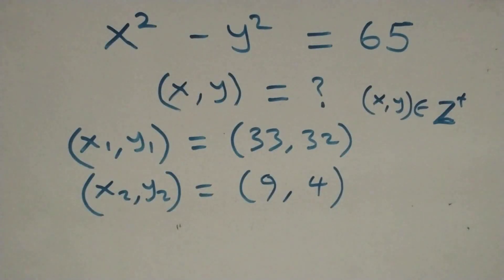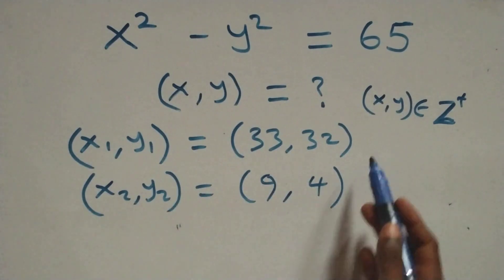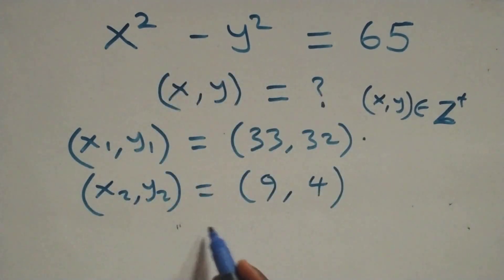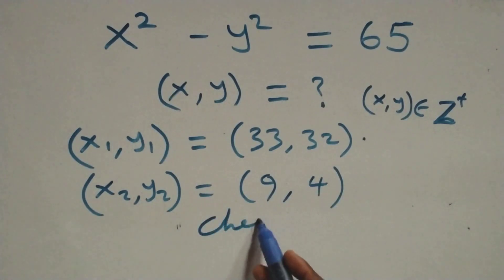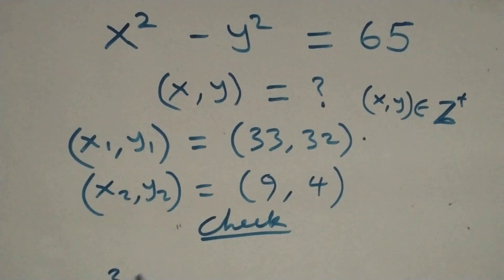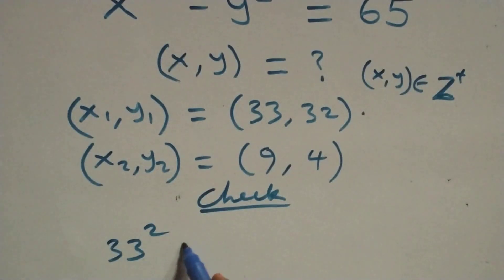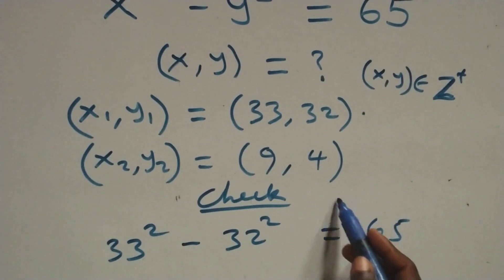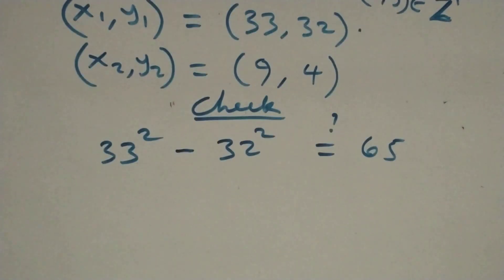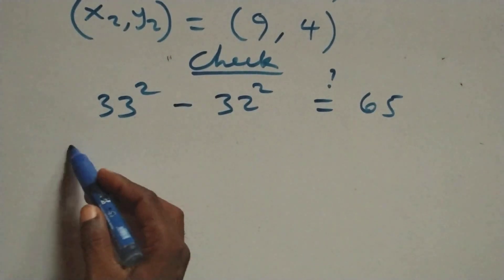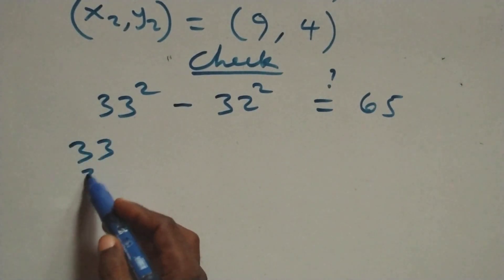Let's verify both solutions. For the first set (33, 32), substituting gives 33 squared minus 32 squared, which should equal 65. Computing 33 squared means 33 times 33.